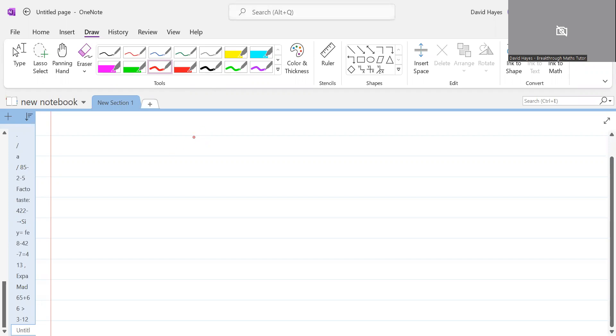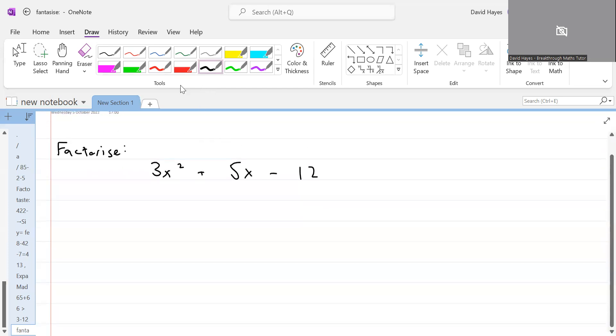Say we got a question like 3x squared plus 5x minus 12, and we are asked to factorize that whole thing. How we do this.